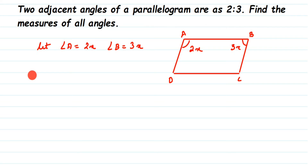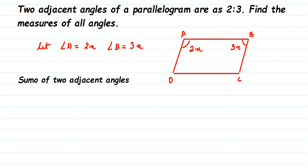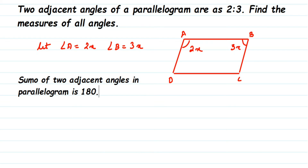Now we're going to use a property here. The property is that in a parallelogram, the sum of adjacent angles is supplementary. Supplementary means when you add two angles the sum is 180 degrees. So the sum of two adjacent angles in a parallelogram is 180 degrees. We're going to use that property here, so angle A plus angle B should be equal to 180 degrees.